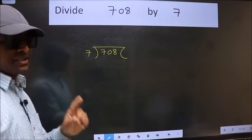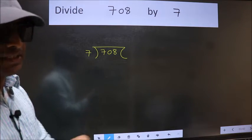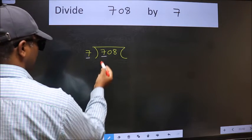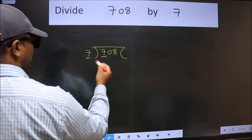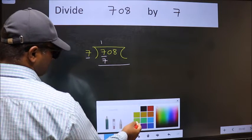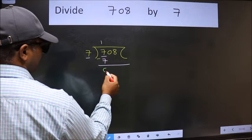This is your step 1. Next, here we have 7 and 7 here. When do we get 7 in 7 table? 7 once 7. Now we should subtract. We get 0.